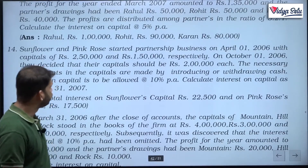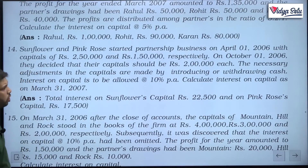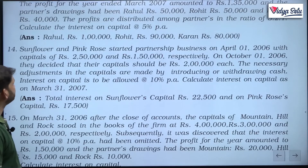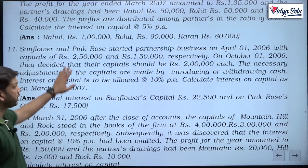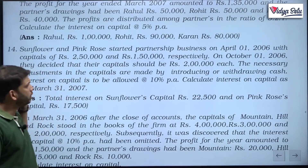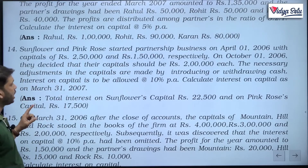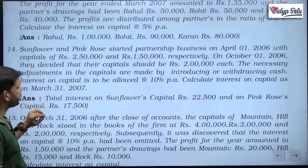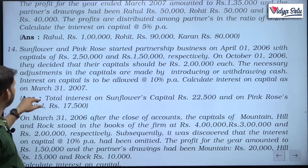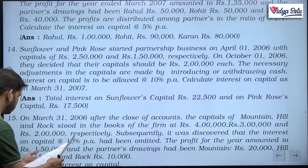Sunflower and Pink Rose started a partnership business on April 1, 2006 with capitals of rupees 2 lakh 50,000 and rupees 1 lakh 50,000 respectively. On October 1, 2006 they decided that their capitals should be rupees 2 lakh each. The necessary adjustments in the capitals were made by introducing or withdrawing cash. Interest on capital is to be allowed at 10 percent per annum. Calculate interest on capital as on March 31, 2007.